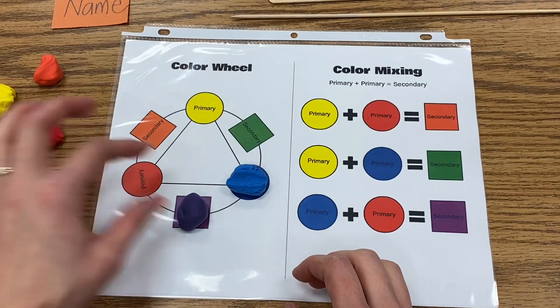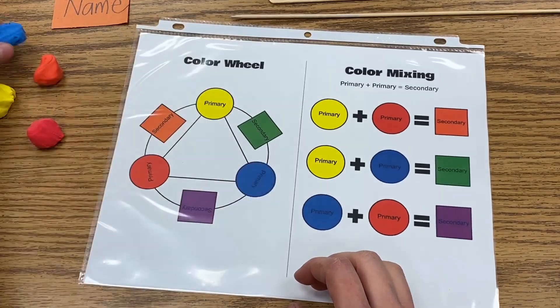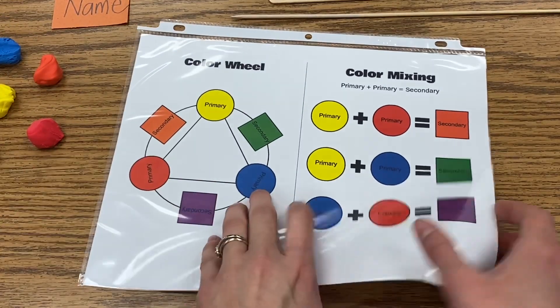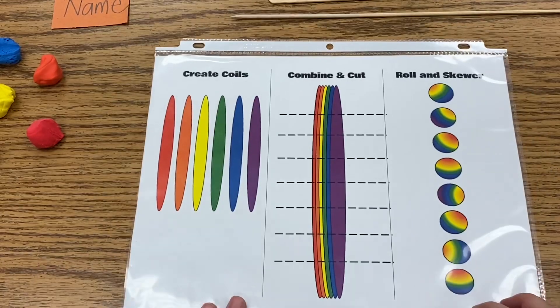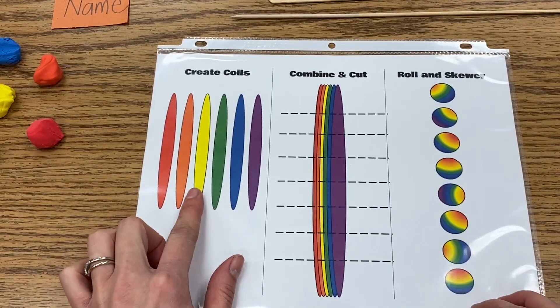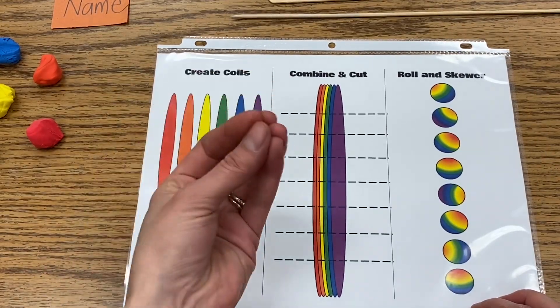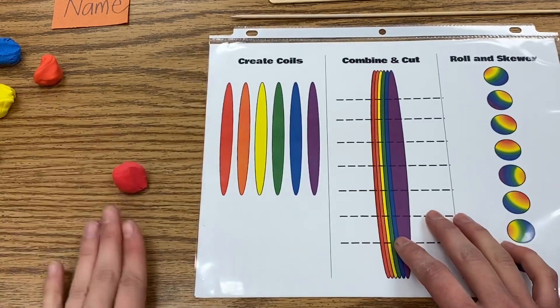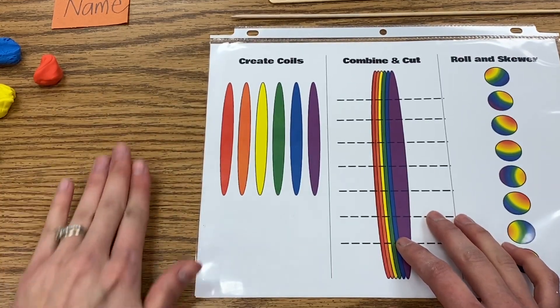We're going to do a really fun technique where we swirl our colors together. So you're going to take your mat and flip it over to the back. And the very first thing you're going to do is create a clay form called a coil.